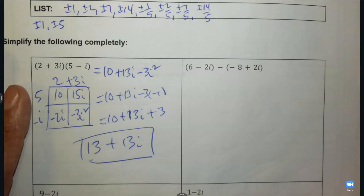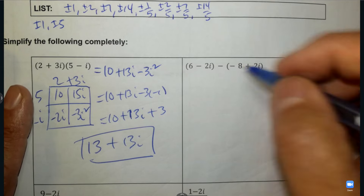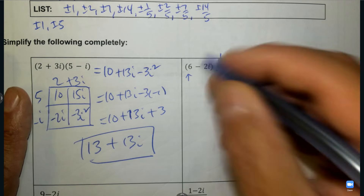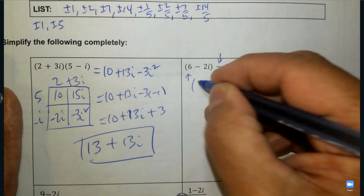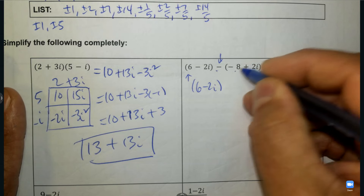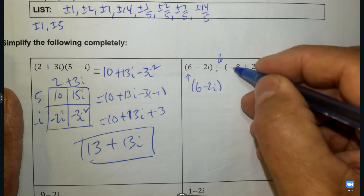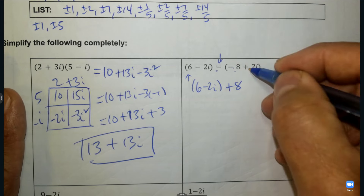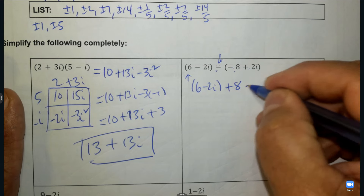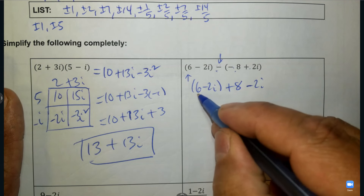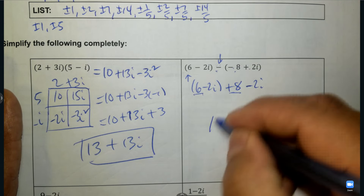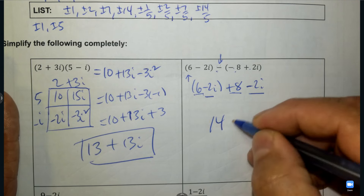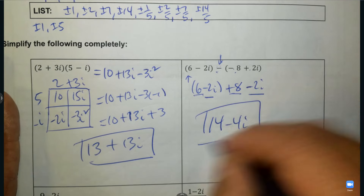The second box: adding and subtracting — we're subtracting. So 6 subtract negative 8. We need to distribute, so a negative times a negative is positive 8, and a negative times a positive is negative. So it's 6 plus 8, which is 14. Negative 2 and negative 2 together — that's negative 4i.